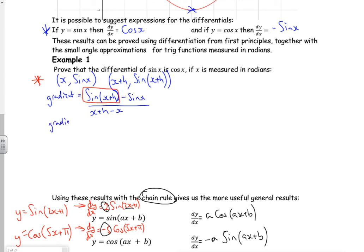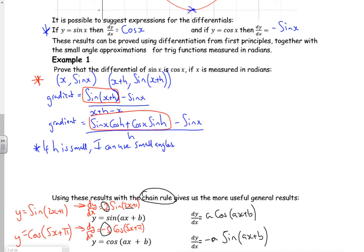So your gradient will be sine x cos h add on cos x sine h. So all this here is the red box above it. Then I'm taking away the sine x and all that is over h. If h is small, so if h is small, I can use my small angle stuff.